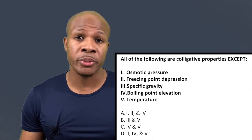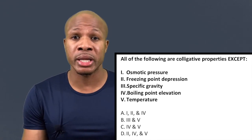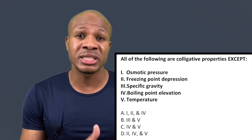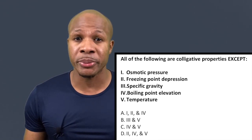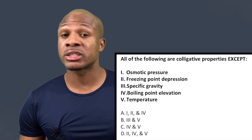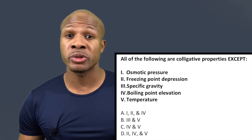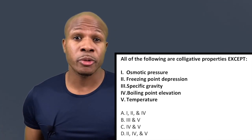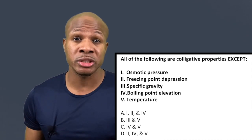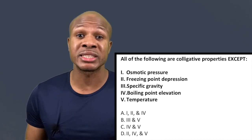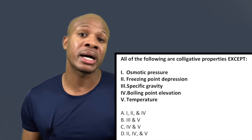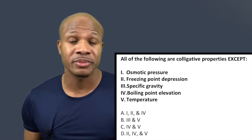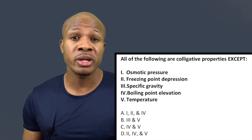Now that we know the definition of a colligative property, we can analyze the different options to decide which ones are not colligative properties. Let's start with the first one: osmotic pressure. Is that a colligative property? Osmotic pressure is a pressure that causes osmosis.